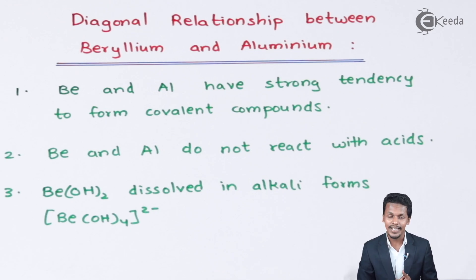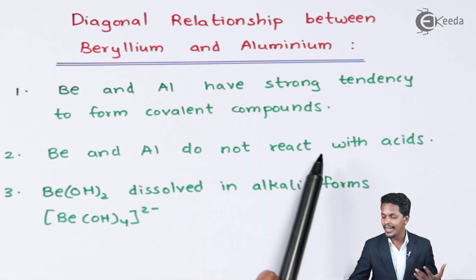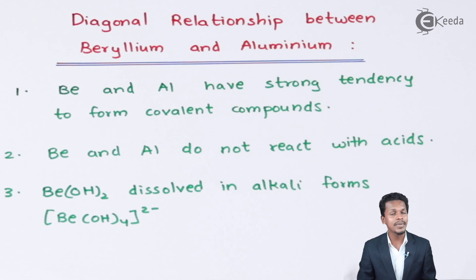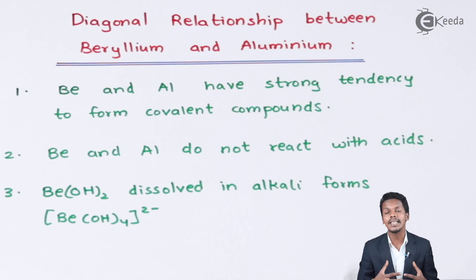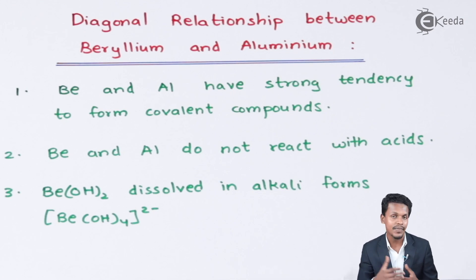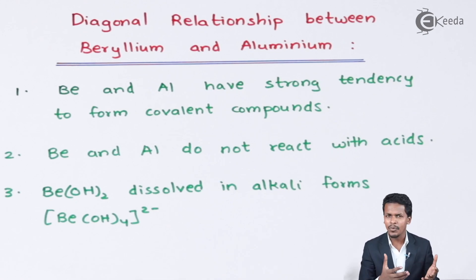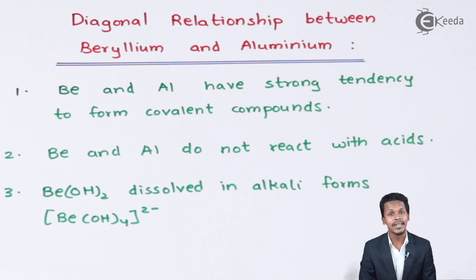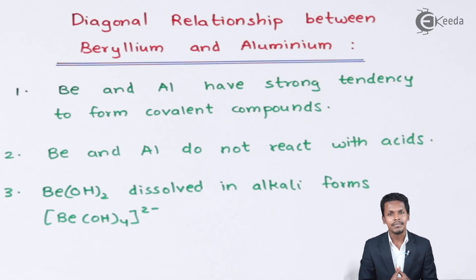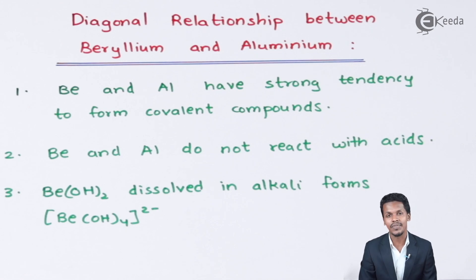The second point is that beryllium and aluminium do not react easily with acids. Both form an oxide layer on the metal surface — beryllium forms a beryllium oxide layer, and aluminium similarly forms an oxide layer — which prevents easy reaction with acids. By contrast, other alkaline earth metals like magnesium also have a magnesium oxide layer, but upon heating it can be reacted with acid. Beryllium, however, does not react easily with acid.